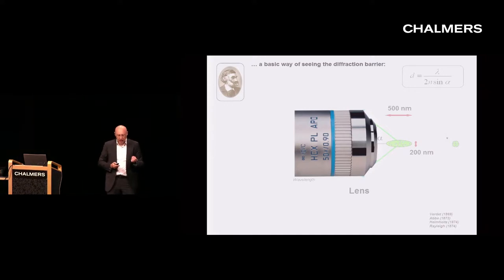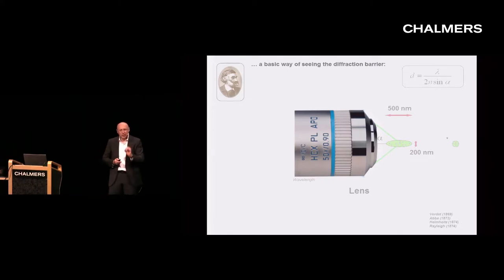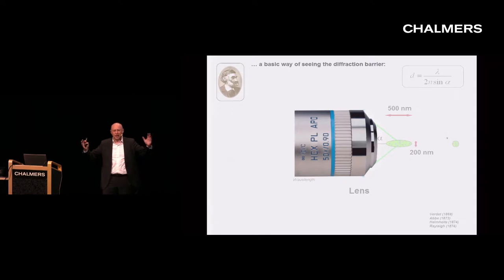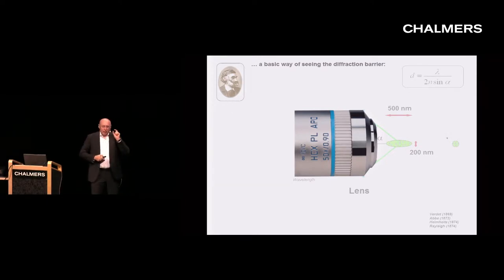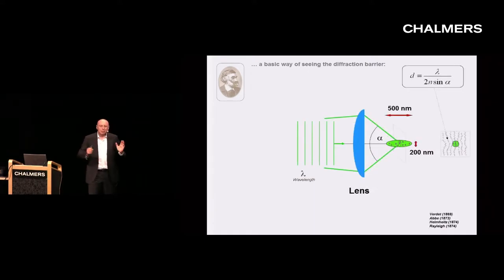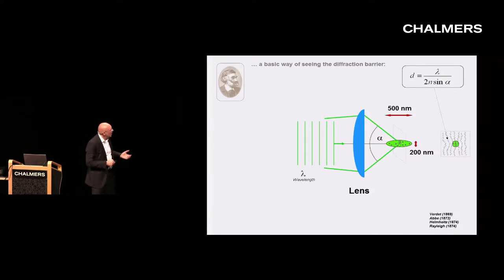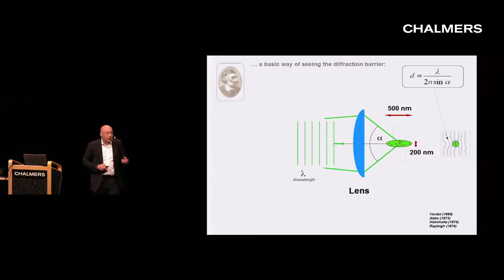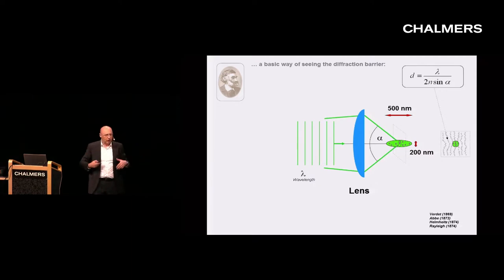In order to overcome this diffraction barrier, we have to understand the problem at its very basics. The role of the lens is nothing but to concentrate the light in space — ideally to produce a point of light. But because light propagates as a wave, it's not possible for the lens to concentrate light on a single point. We get a blob of light, at least about 200 nanometers wide and 500 nanometers along the optic axis.